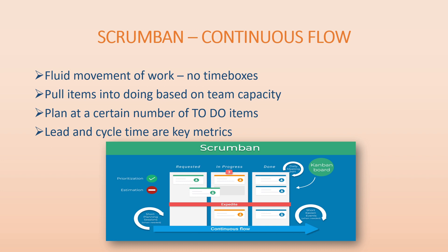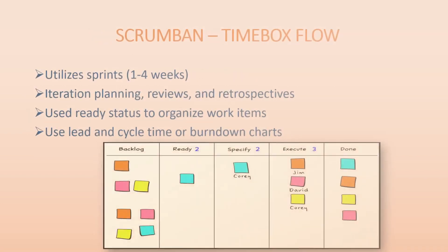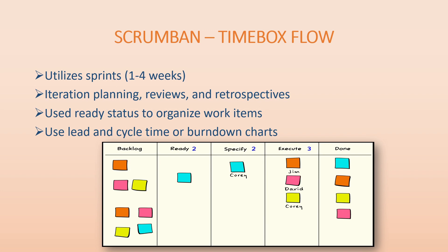The first type is Scrumban Continuous Flow, which is more like a Kanban model. It has a fluid movement of work with no time boxes, items are pulled into 'Doing' based on team capacity, and a limit is set on the number of 'To Do' items. The key metrics are lead time and cycle time. Cycle time is the total time to complete a task from 'To Do' to 'Done,' while lead time is the time from 'In Progress' to 'Done.'